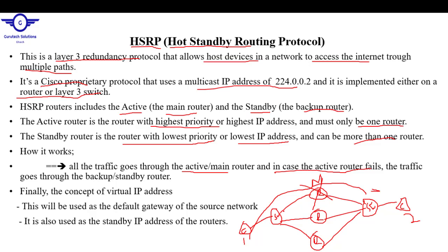Redundancy in the network is very important. In previous classes, we said that at the physical layer, how do we implement redundancy? Assume we have two switches with at least three physical links connecting them — this is called redundancy at the physical layer. Having multiple links such that when one link is down, another link will pick up.